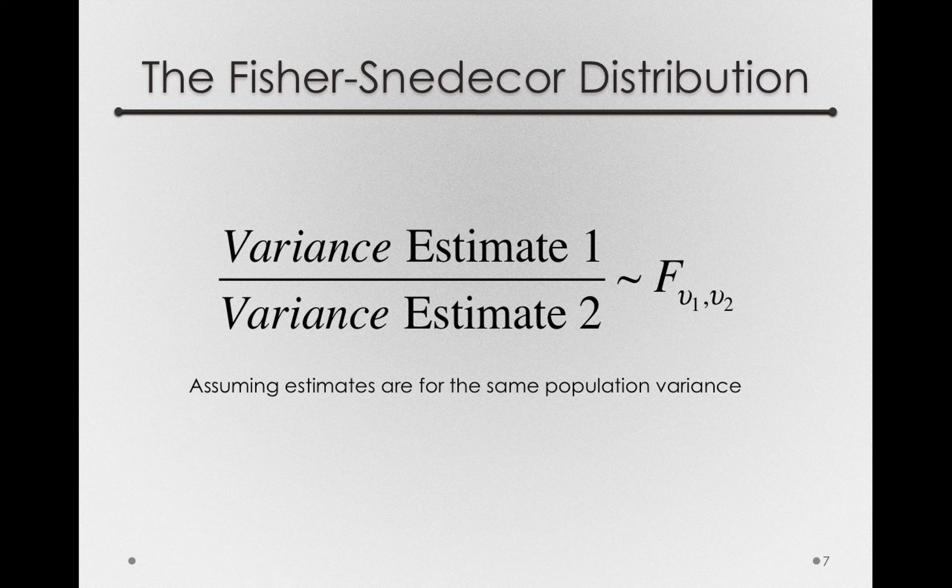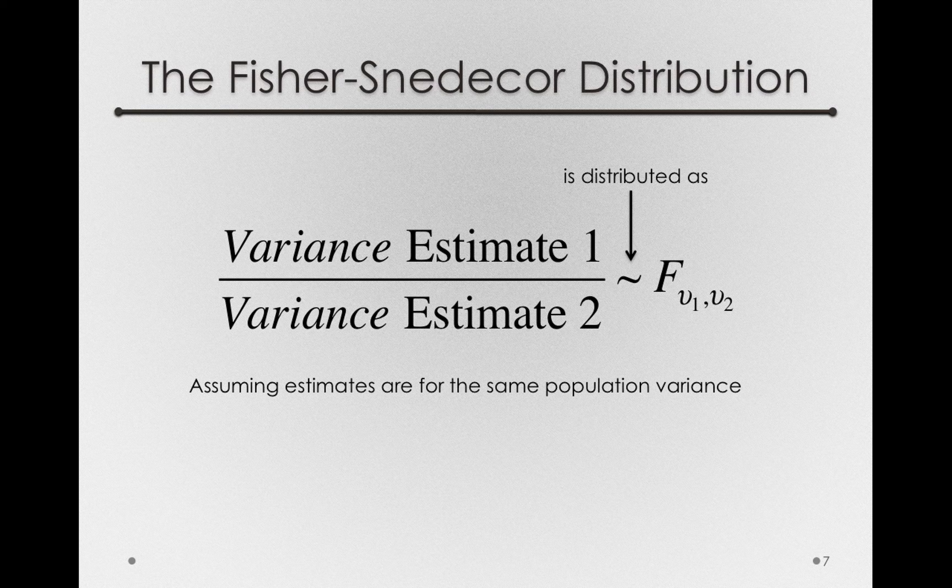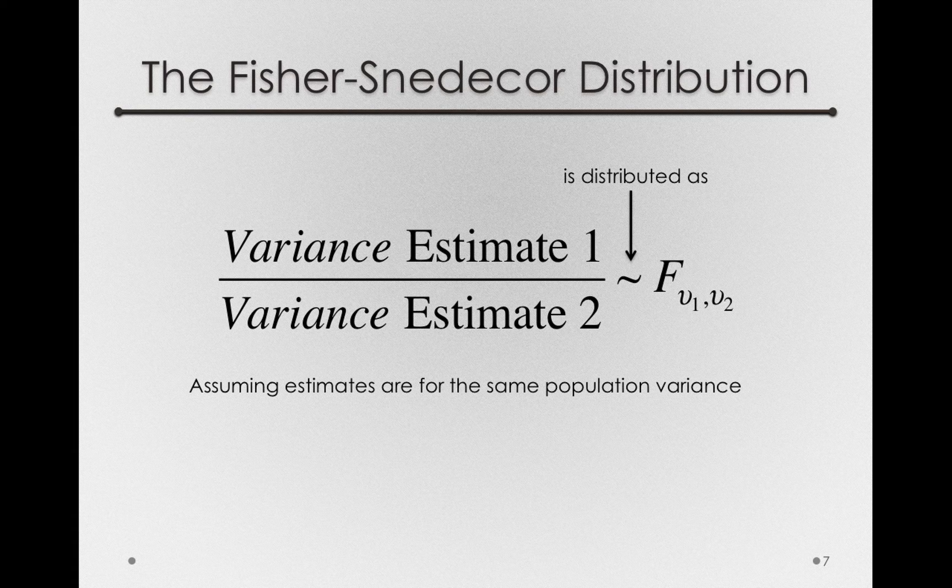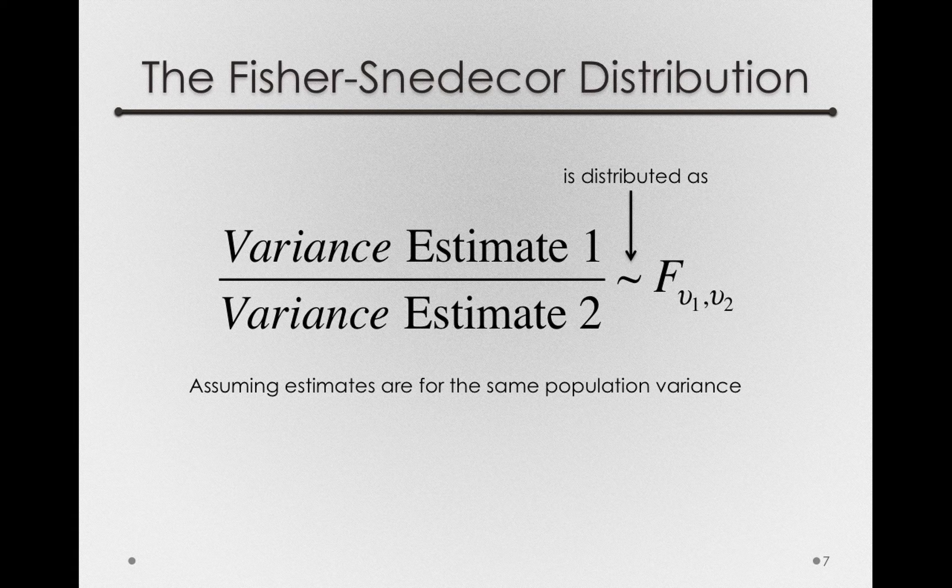In the actual formula here, this little squiggly is distributed as. So the distribution of the ratio of variances is distributed as this F distribution, which I'll show you in just a second. Now one more thing I should point out. In the subscripts for the F, we see two new symbols. They're nu's, nu one and nu two.